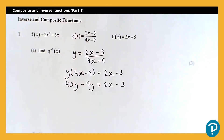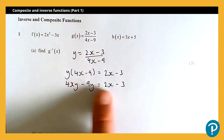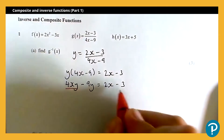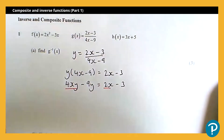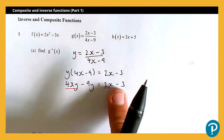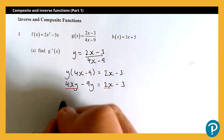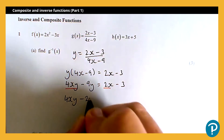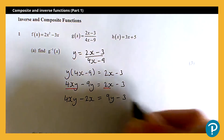Now what I want is all the x terms on one side and anything else on the other. I want the 4xy and the 2x together, and then the other terms on the opposite side. So I'm going to subtract 2x and add 9y, giving me 4xy subtract 2x is equal to 9y subtract 3.